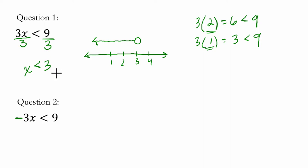In the second problem, everything is the same, except it's essentially flipped around. Because when we divide by negative 3 on both sides, we get x is not less than negative 3, but greater than it.